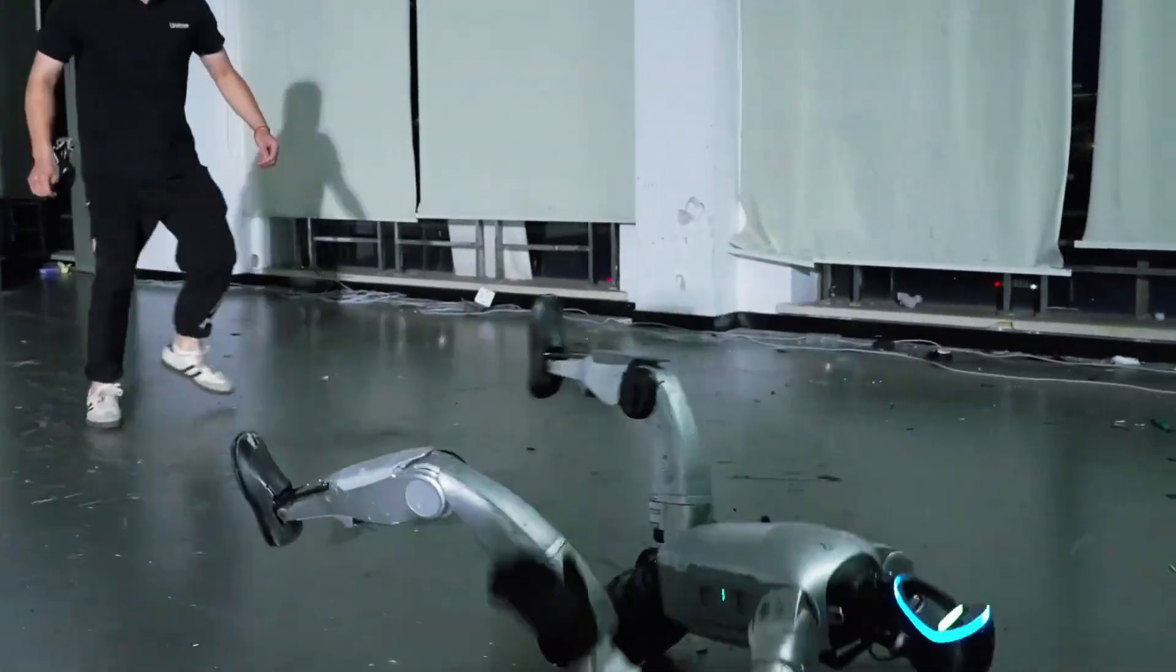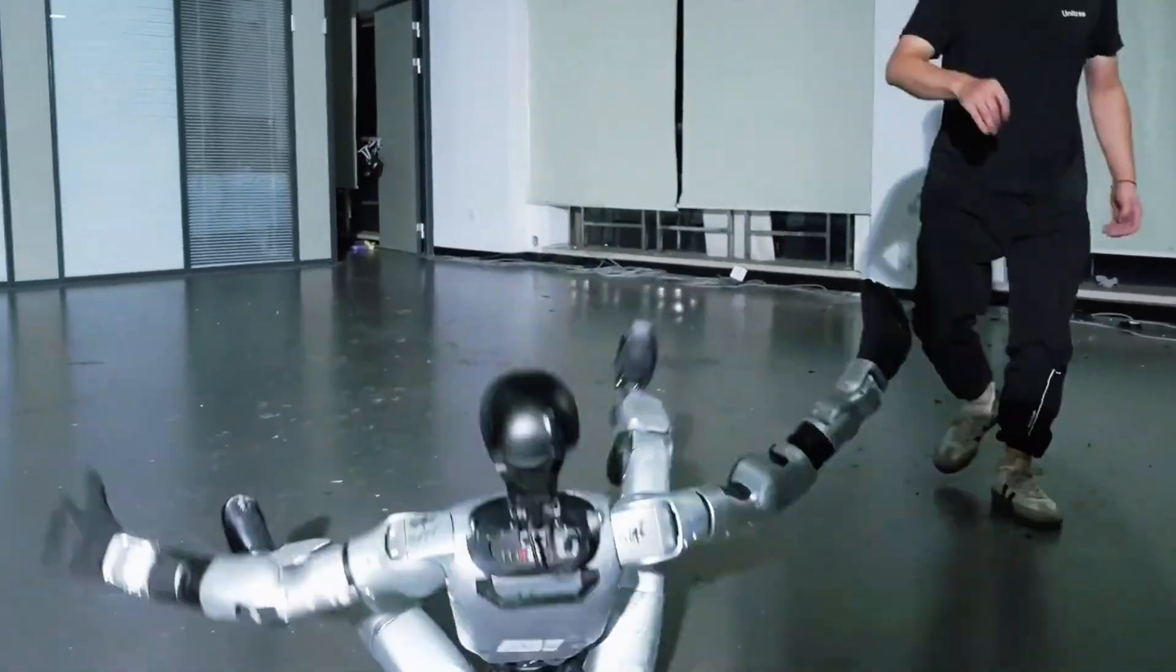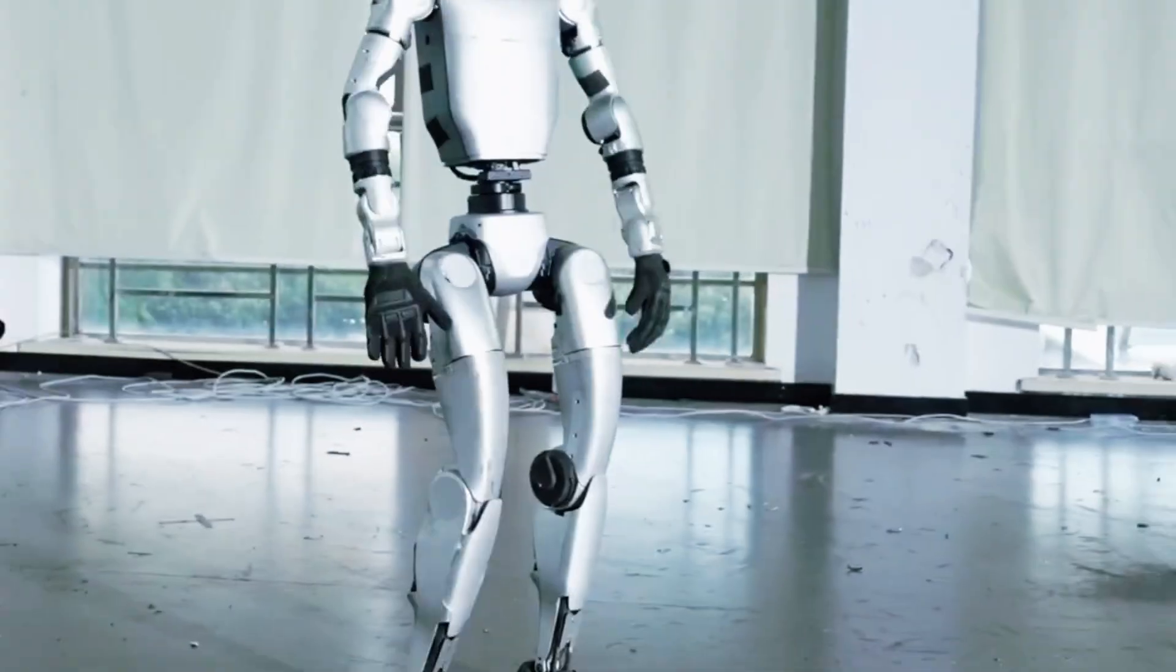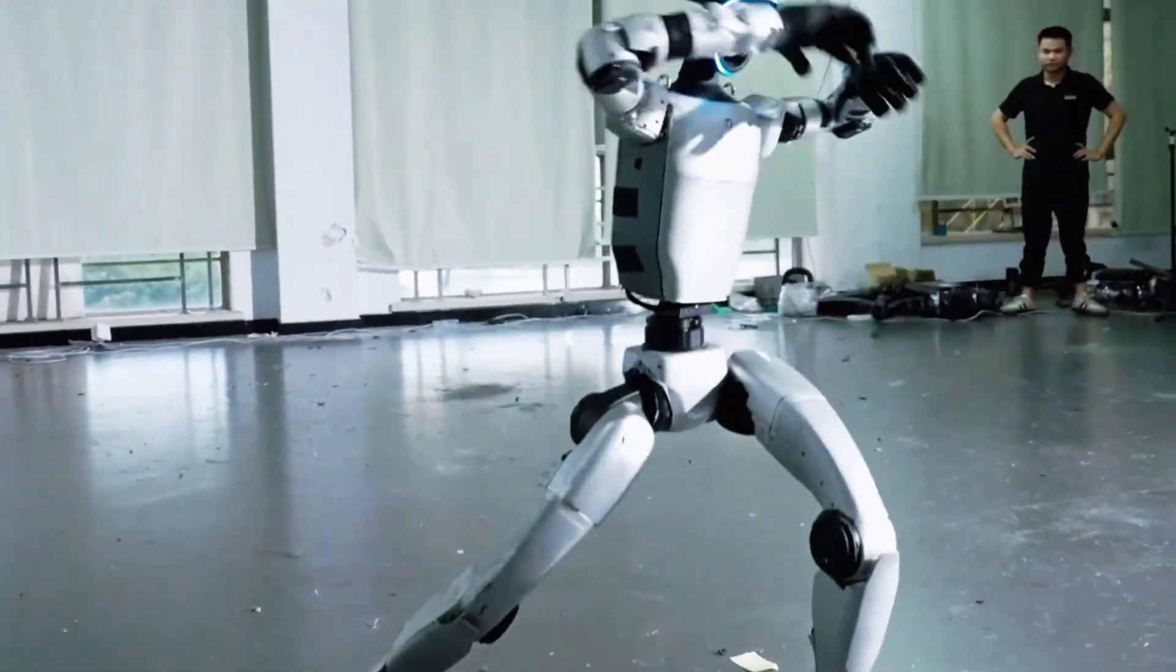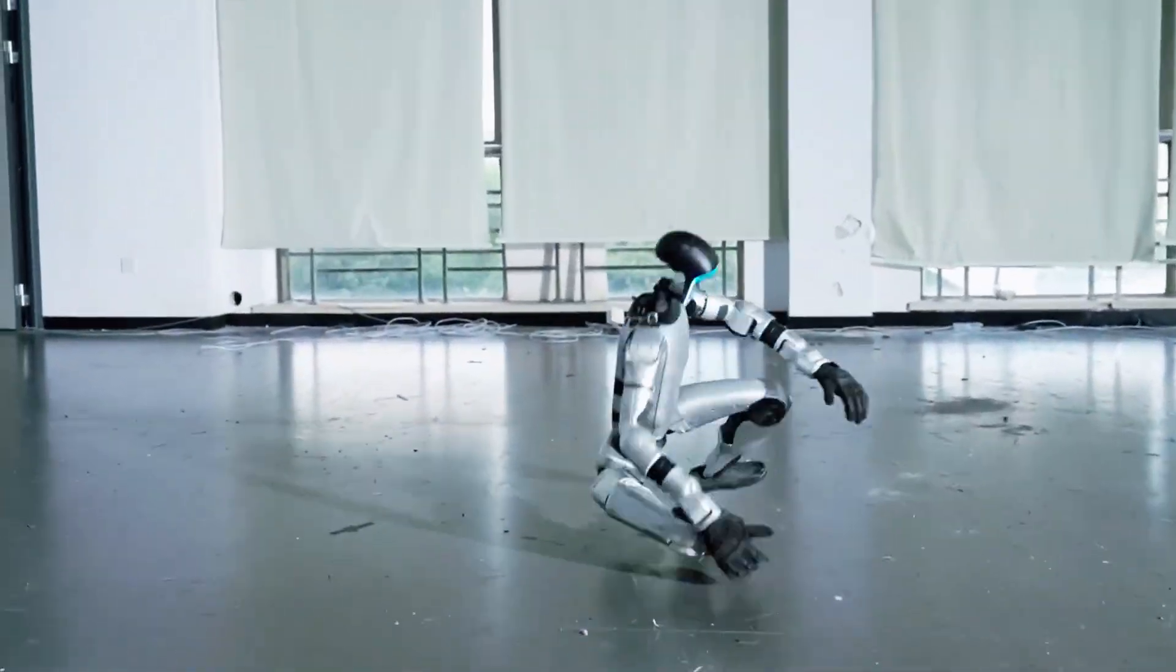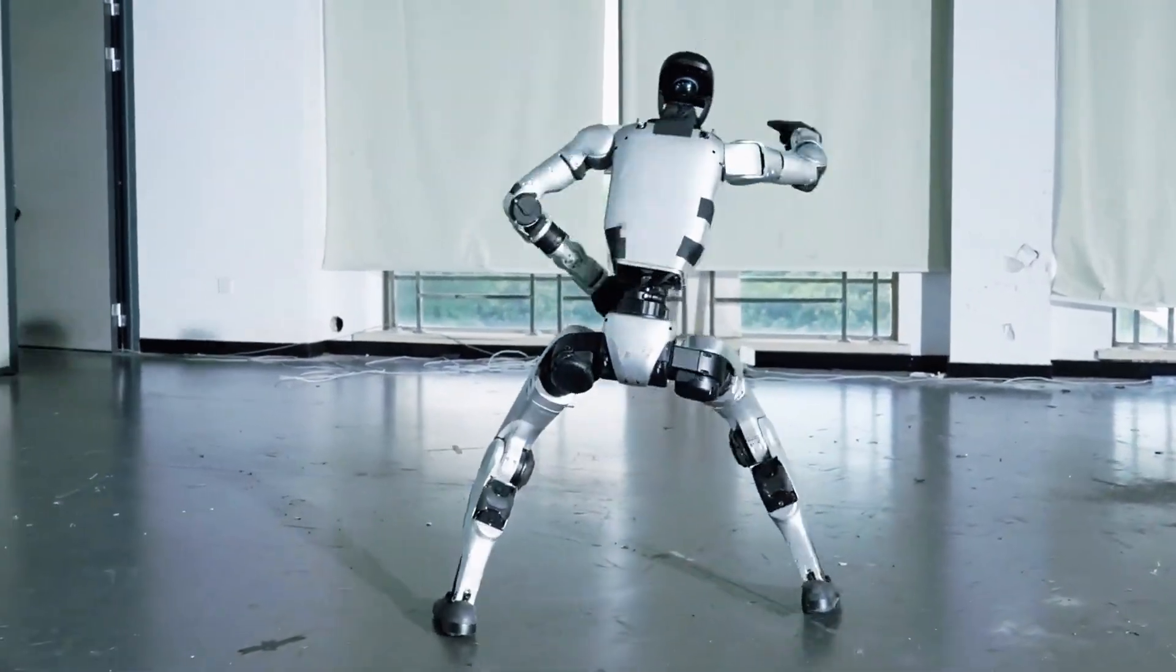Now here's where it gets wild. Normally, a robot falling over is game over, reset, awkward recovery, maybe even broken parts. But the G1? Nope. You knock it down and it bounces back like a fighter who refuses to stay on the mat.